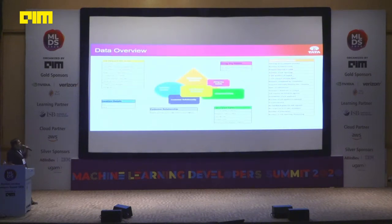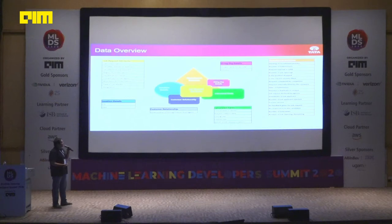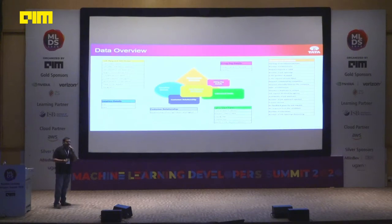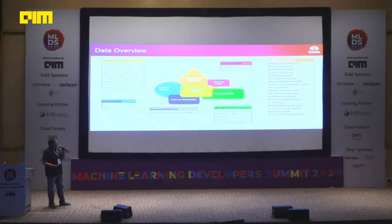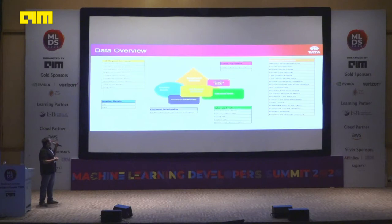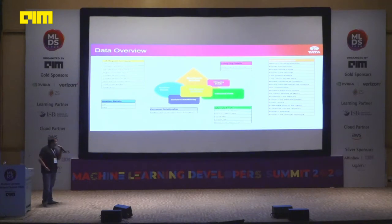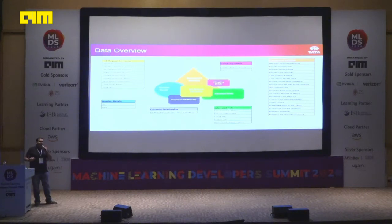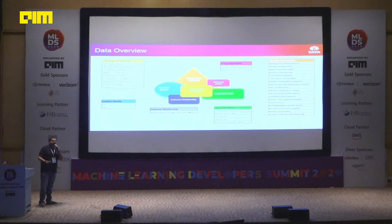In our data overview, the sources of data include recruitment activities — like how many interviews have been scheduled, how many submissions have been made, the time taken between interviews and job request submissions, and the number of job openings remaining. Another aspect is job requests — whether the applicant has been offered the job, rejected, or the applicant has rejected the job. And importantly, customer relationship: does the agent have an existing relationship with the organization prior to the request?